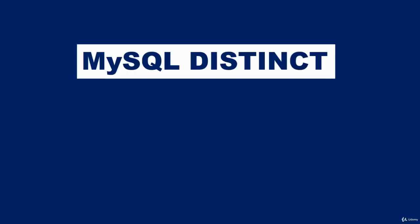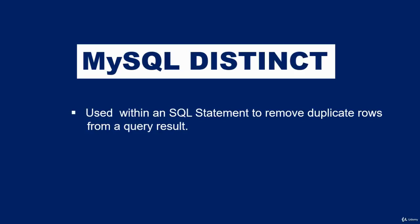Hello and welcome. The DISTINCT keyword is used within an SQL statement to remove duplicate rows from the result set of a query. When you execute some SQL statements, the result may contain duplicates. To remove them, include the DISTINCT keyword in your statement. The DISTINCT keyword does not remove duplicates from the table itself — it only removes them from the result output of the query.